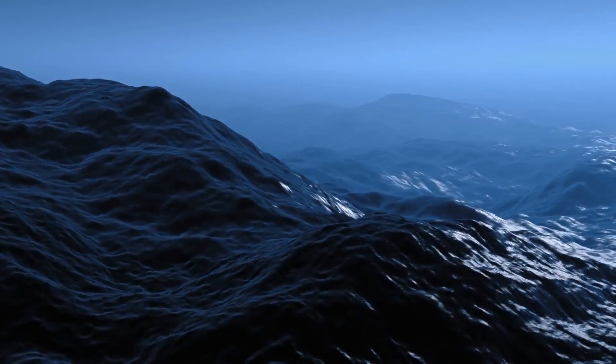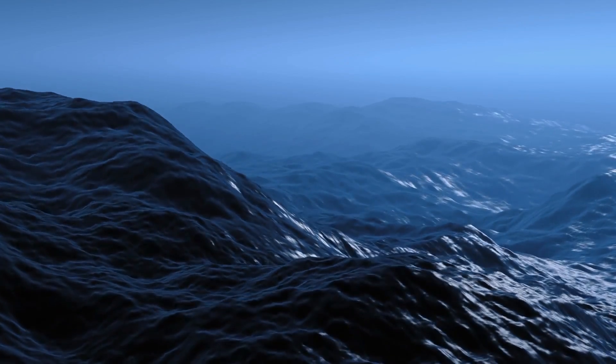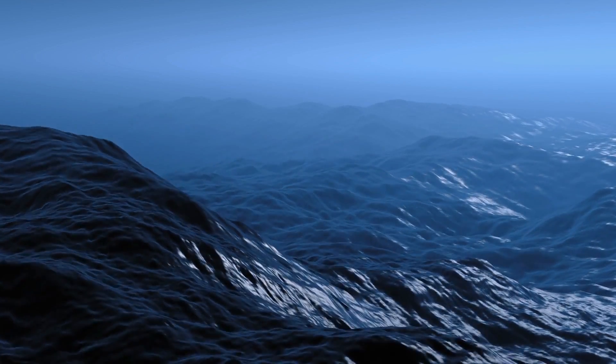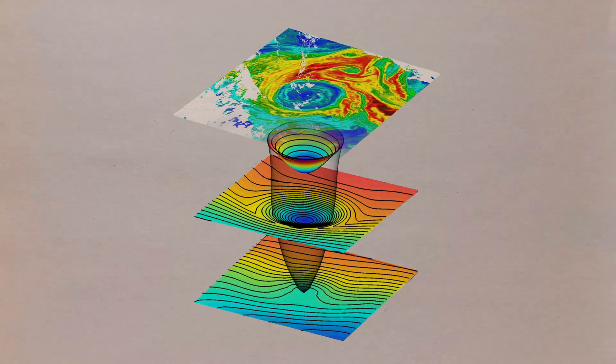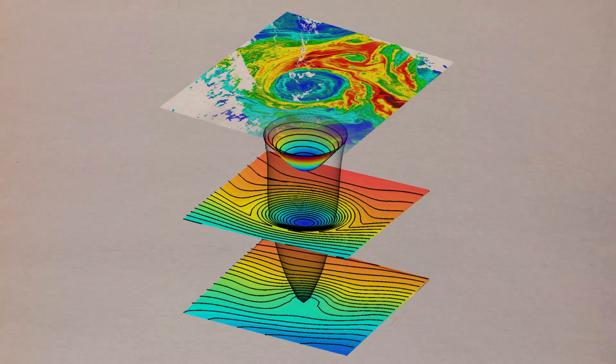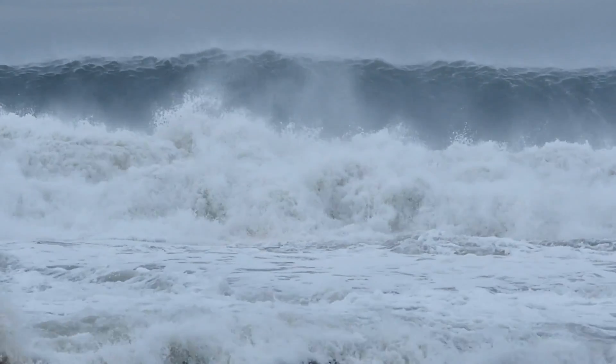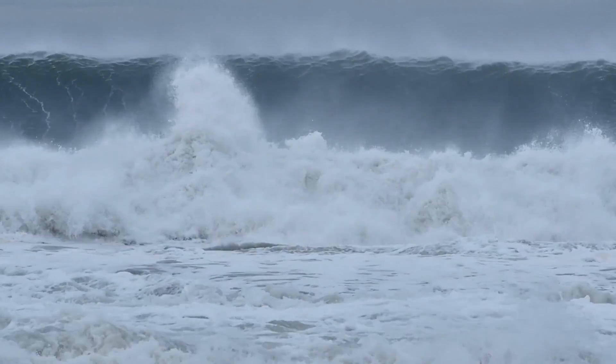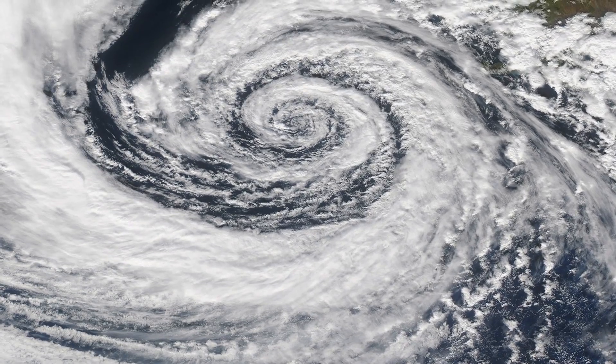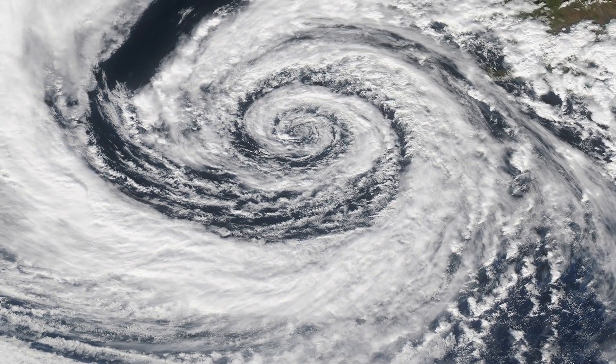These ocean vortices act as a container for the water trapped inside them because they are so tight. The temperature and salt content of the water within the eddies may differ from that of the surrounding ocean. They convey microorganisms like plankton as well as human rubbish like plastic waste and oil as they drift over the water.